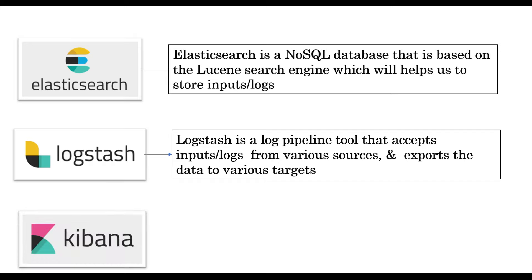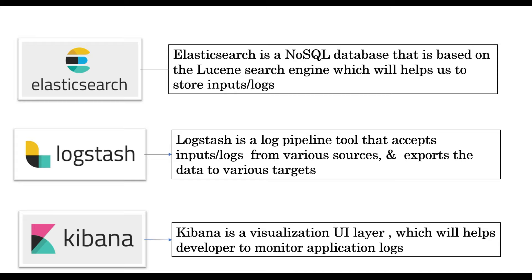The last component is Kibana, which is used for visualization and helps developers monitor their application logs from a user interface. So the purpose of each component: Elasticsearch stores data, Logstash processes the data, and Kibana helps us view that data.